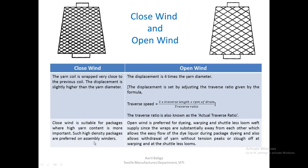High-density packages are especially useful when being rewound, as in the case of assembly winders. Open wind is preferable for dyeing because it gives good dye penetration. It is also preferred for warping and shuttleless looms in the case of weft supply, since the wraps are substantially away from each other, which allows easy flow of the dye liquor during package dyeing. In the case of weft supply, it allows easy withdrawal of the yarn without any tension peaks or slough-off, both at warping and shuttleless looms. Wherever withdrawals are required, one would go for an open wind rather than a closed wind.